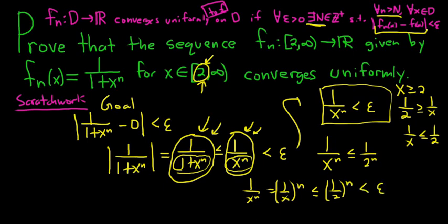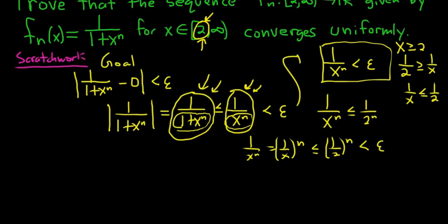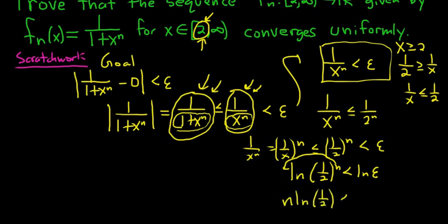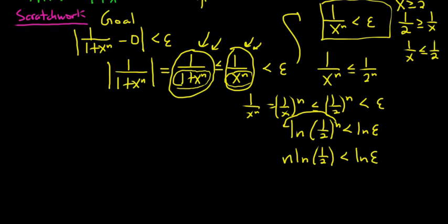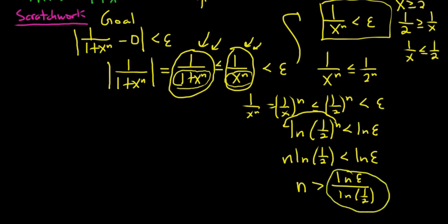We want one half to the n to be less than epsilon, so we solve for n. Taking the natural log of both sides: ln(1/2)^n is less than ln(epsilon). Using the power rule, bring down n: n·ln(1/2) is less than ln(epsilon). Since ln(1/2) is a negative number, dividing by it switches the inequality sign, giving n greater than ln(epsilon) over ln(1/2). We just have to choose an n bigger than this, which we can do by the Archimedean principle.